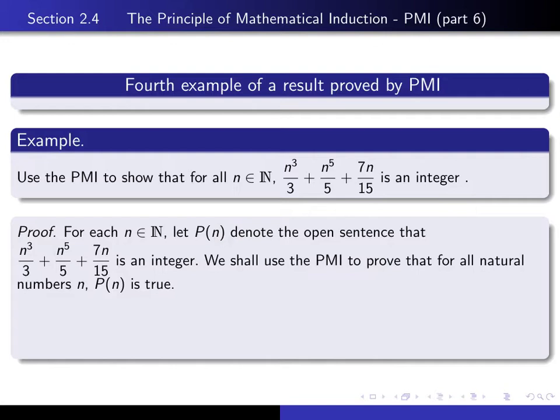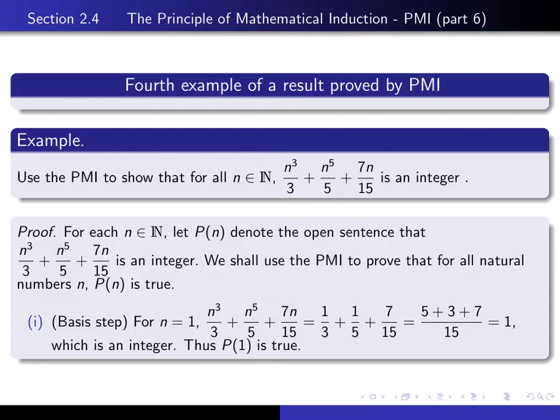The next step in the proof is the basis step, so see if you can write down a proof of the basis step. So here's my proof, for n equal to 1, if you simply write down what this is for n equal to 1, it's 1/3 + 1/5 + 7/15. If you get a common denominator of 15 and add them together, you see that it really does come out to be 1, which is an integer. Thus P(1) is true.